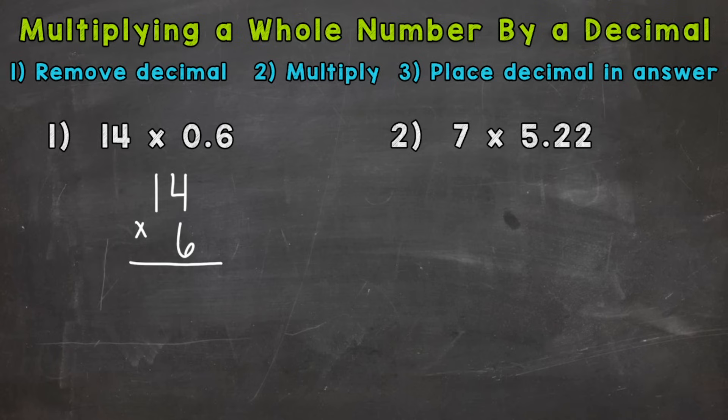Number two, we multiply or solve just like we would any other multiplication problem involving whole numbers. So 6 times 4 is 24. 6 times 1 is 6, plus that 2 is 8. So we get an answer of 84, but we're not quite done yet.